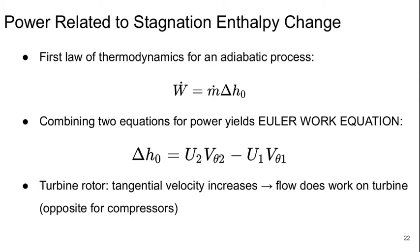From thermodynamics, the power is related to the stagnation enthalpy change. The power is ṁ delta h0, because we assume that we have adiabatic flow in our compressor or turbine. And if we combine the two equations for power, we get the Euler turbine equation, which tells us that Δh0 is equal to u2 vθ2 minus u1 vθ1. In a turbine rotor, the tangential velocity increases, so the flow does work on the turbine, and it's the opposite for compressors.